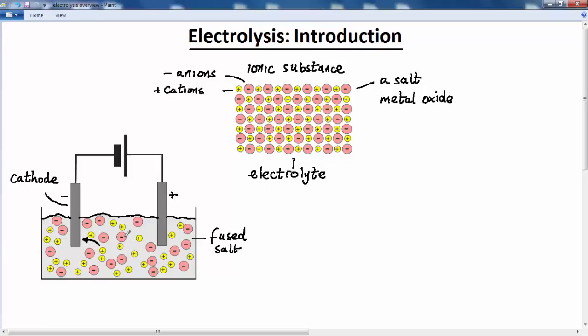Likewise, the negative ions, which are the anions, they will be attracted to the positive electrode. And so the anions are attracted to the anode. And this is called the anode.